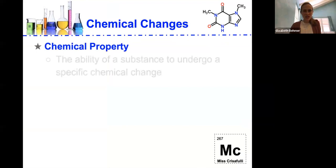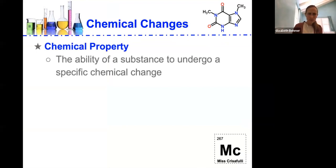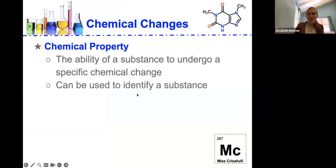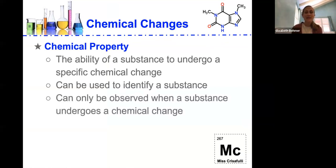So a chemical change, first of all, we need to talk about chemical properties, and we're just going to review a little bit what a chemical property is. Chemical properties are the ability of a substance to undergo a specific chemical change, and the chemical properties can be used to identify the substance. They can only be observed when a substance undergoes a chemical change.